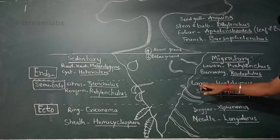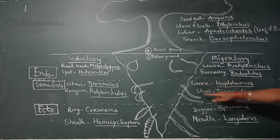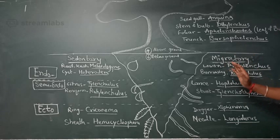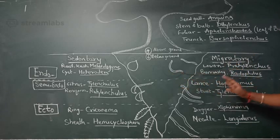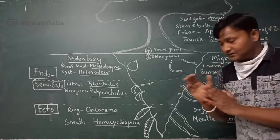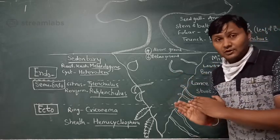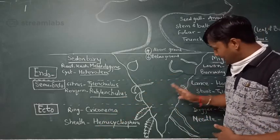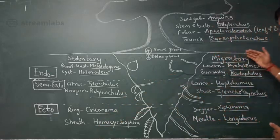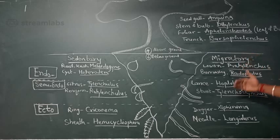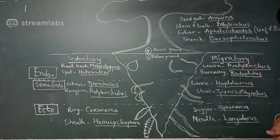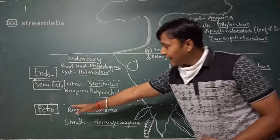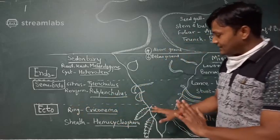Under migratory semi-endoparasitic nematodes, there are stunt nematodes — Tylenchorhynchus and Tylenchus. These are migratory semi-endoparasitic nematodes because the head region enters the plant system while the body remains outside, and they can move from one place to another.